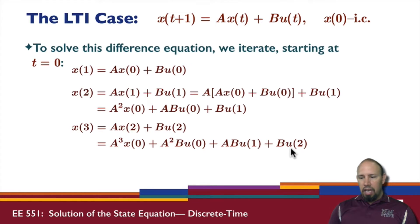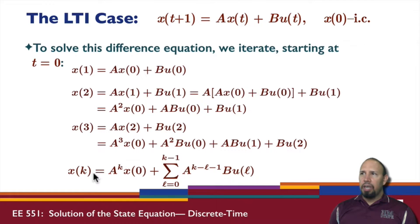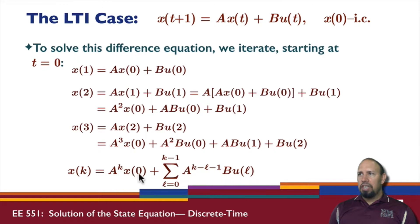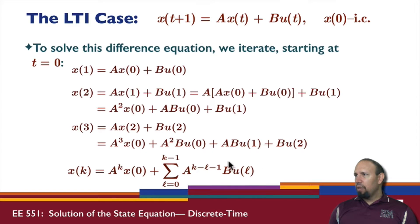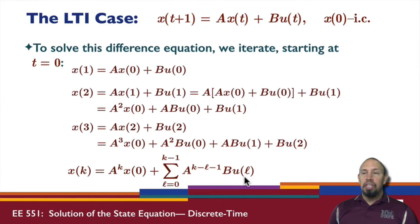We could keep going, and if we do, the general solution is: x at time k equals the matrix A raised to the power k times the initial condition, plus a summation term. Notice that the powers of A are decreasing while the index in u is increasing. This gives us the complete solution for a given initial condition and input sequence.